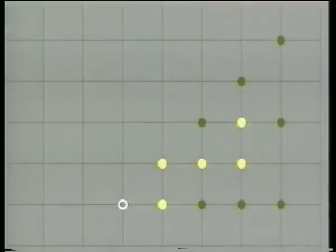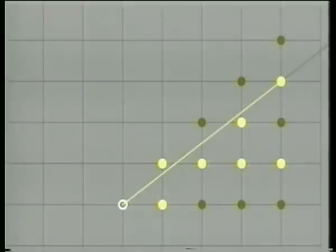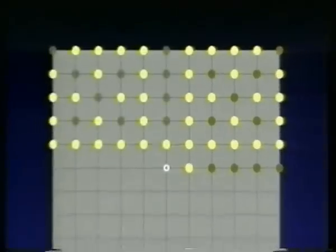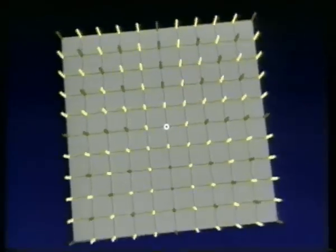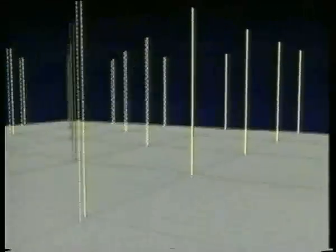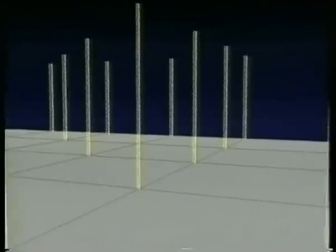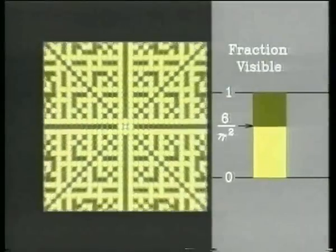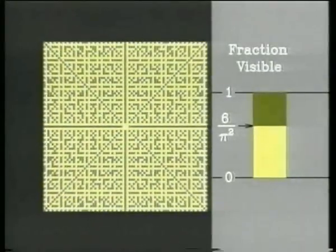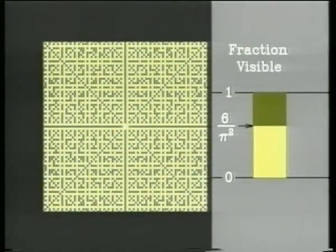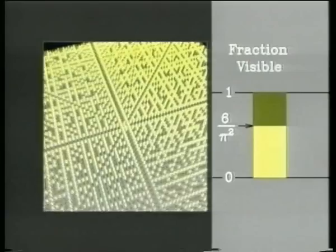The next example comes from number theory. Put a yellow dot at each lattice point whose rectangular coordinates have no prime factor in common. Another way of saying this is: put a yellow dot at each lattice point that's visible from the origin—the dark dots are hidden behind the bright ones. The probability that a lattice point is visible from the origin is six over π². Pi has something to do with prime numbers.